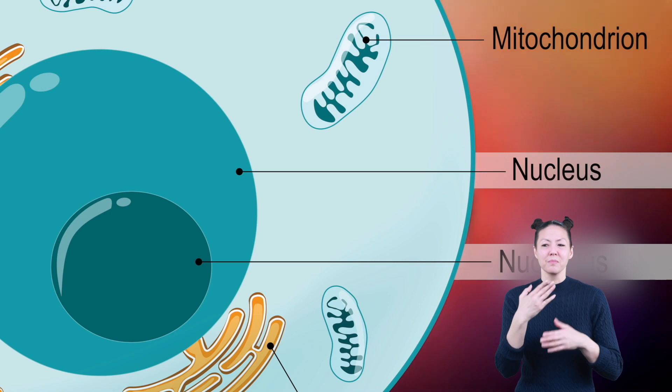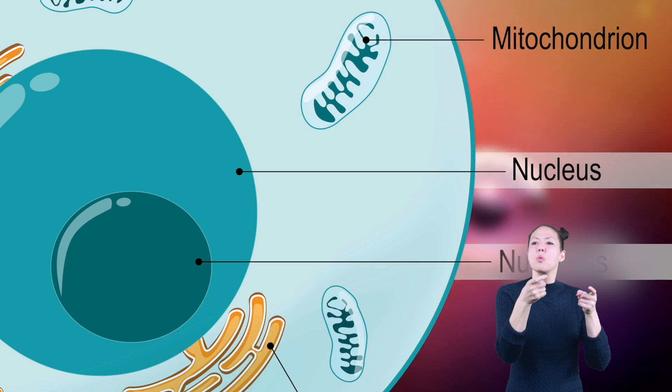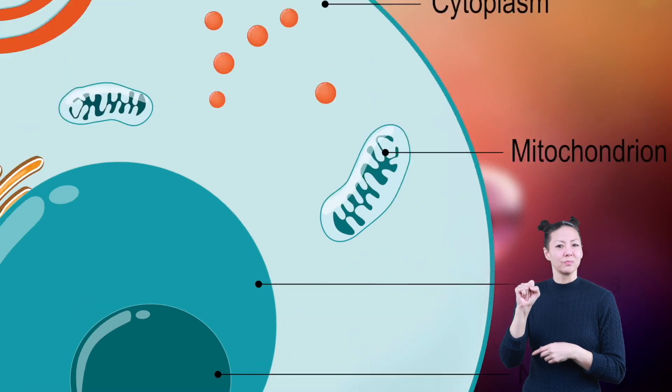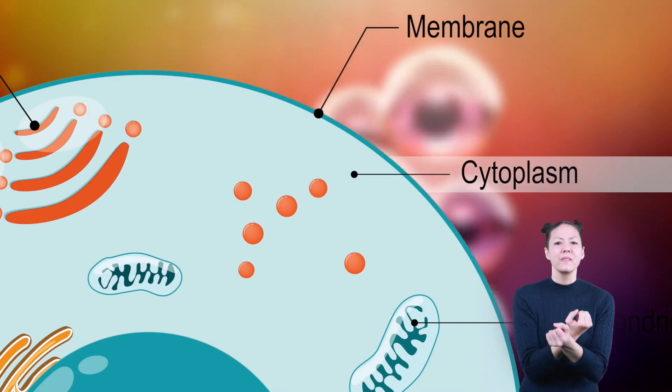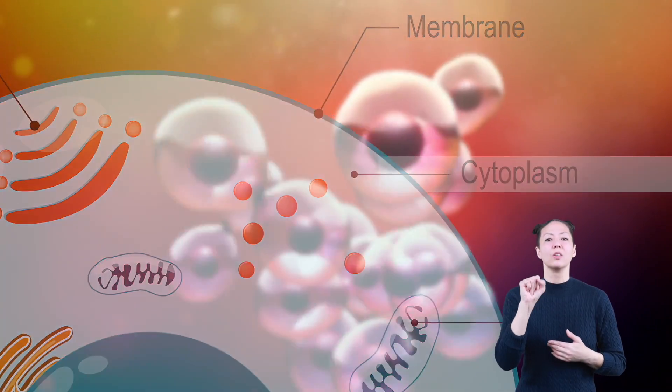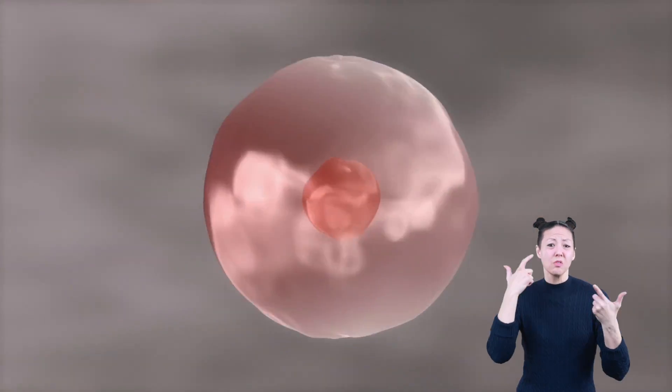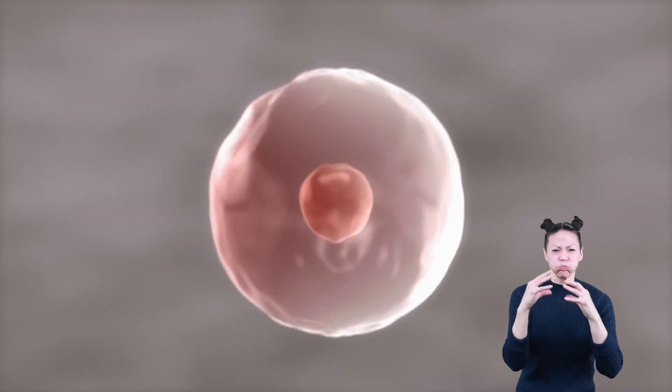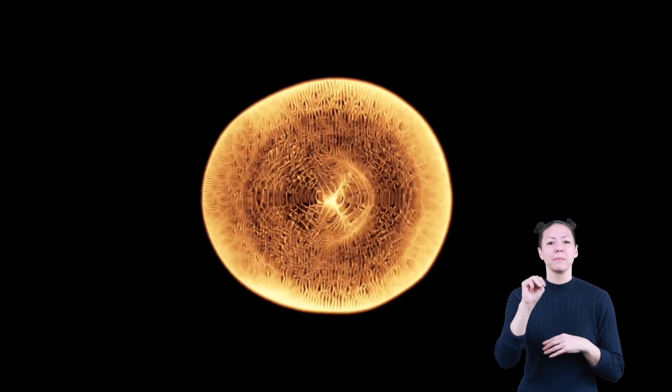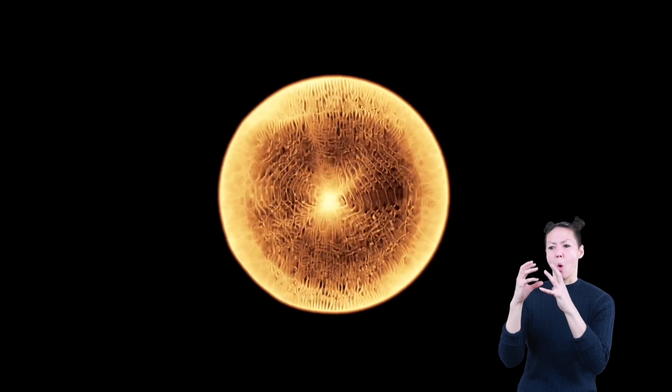The nucleus is the brain of the cell, which basically means it controls the cell. Cytoplasm is everything outside of the nucleus, but inside the cell wall. It is a large gel-like fluid. Cytoplasm gives cells its shape and holds everything in place.